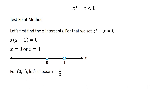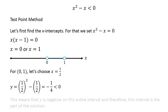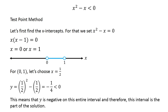For the interval 0 to 1, let's choose x equal to 1 half. At this value of x, y evaluates to negative 1 over 4, which is less than 0. This means that y is negative on this entire interval, and therefore this interval is part of the solution.